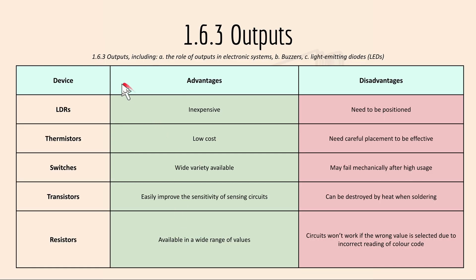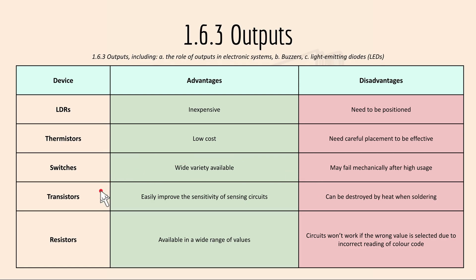Now here are some device advantages and disadvantages. LDRs are inexpensive but they need to be carefully positioned. Thermistors have low cost but need careful placement to be effective. Switches have a wide variety available but may fail mechanically after high usage. Transistors can easily improve the sensitivity of sensing circuits but they can be destroyed by heat when soldering. Resistors are available in a wide range of values but the circuit won't work if the wrong value is selected due to incorrect reading of the color code.